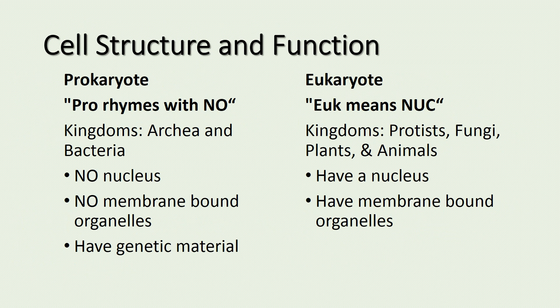There are two types of cells that make up living organisms: prokaryotes and eukaryotes. The way to remember prokaryotes is that 'pro' rhymes with 'no,' therefore they have no nucleus or no membrane-bound organelles. The kingdoms that make up prokaryotes are archaeobacteria and eubacteria. For eukaryotes, remember 'euk' means 'nuke,' therefore they have a nucleus. The kingdoms that make up eukaryotes are protista, fungi, plants, and animals. Both prokaryotes and eukaryotes have genetic material.